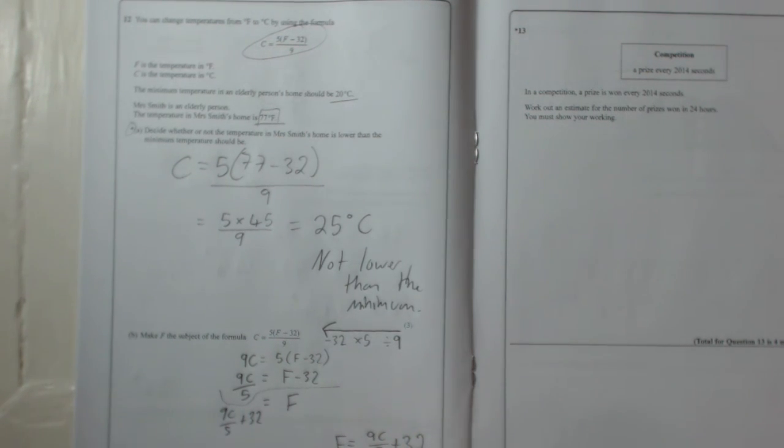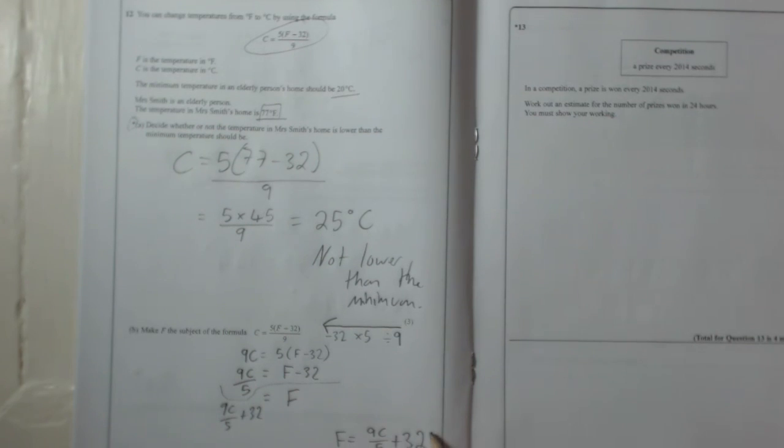Do not write the add 32 on top of there. It's got to be separate. Just like that. Thank you.